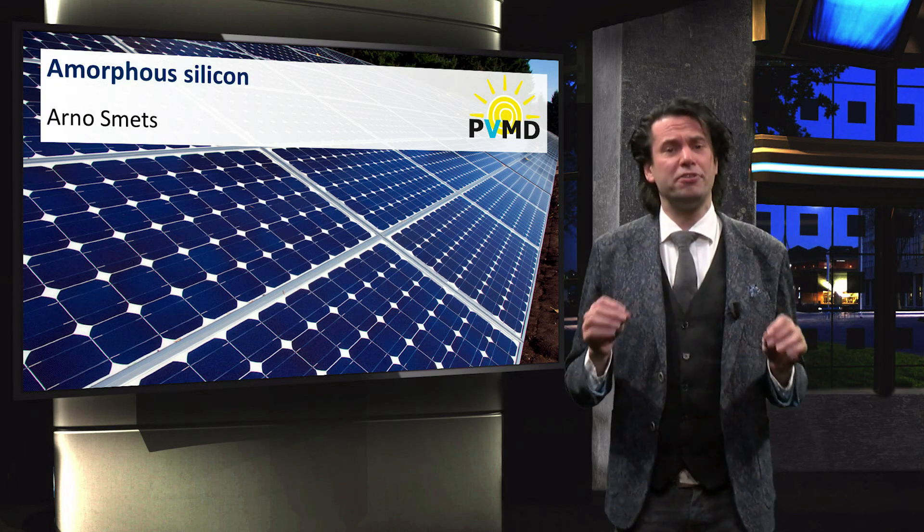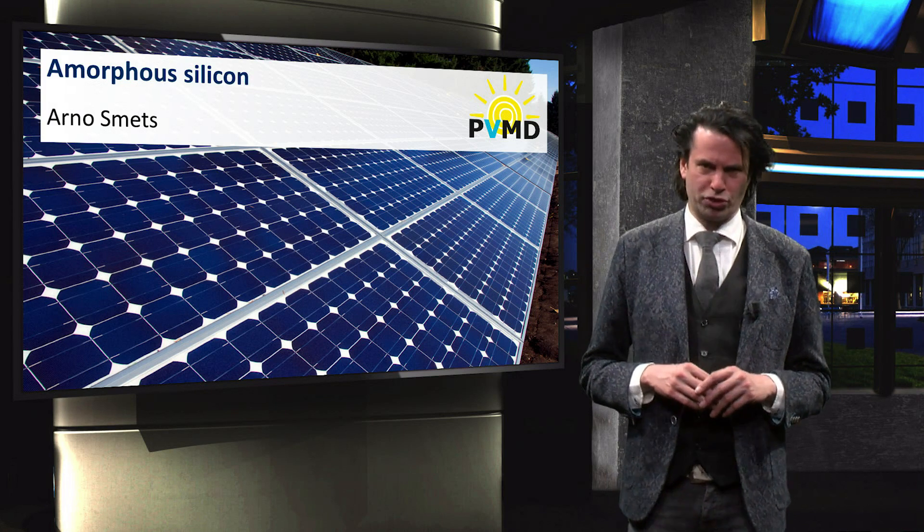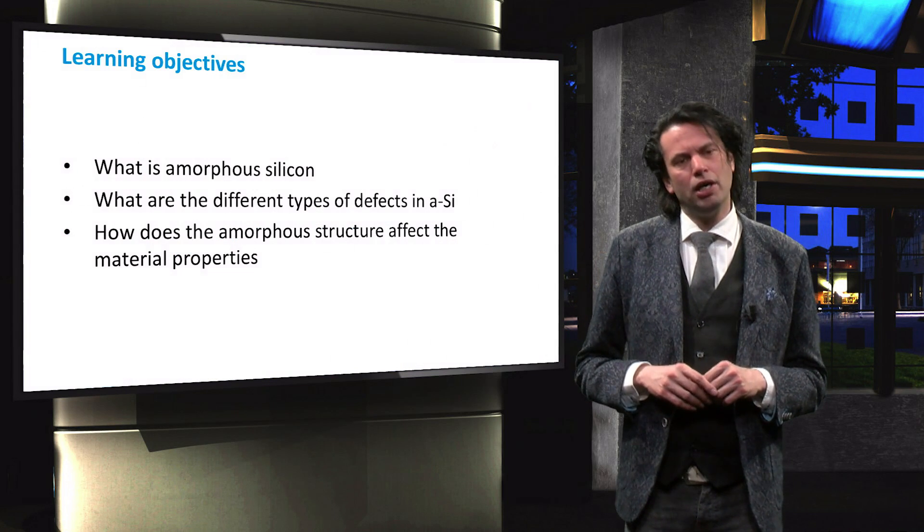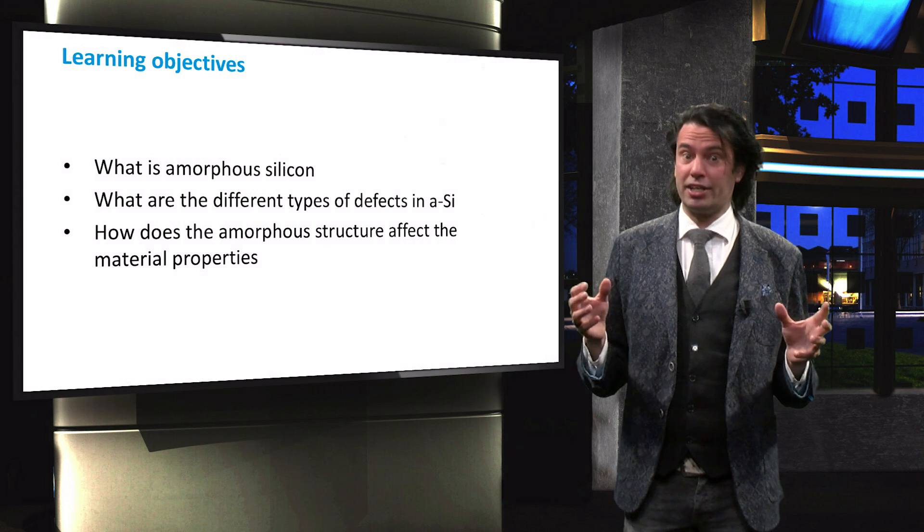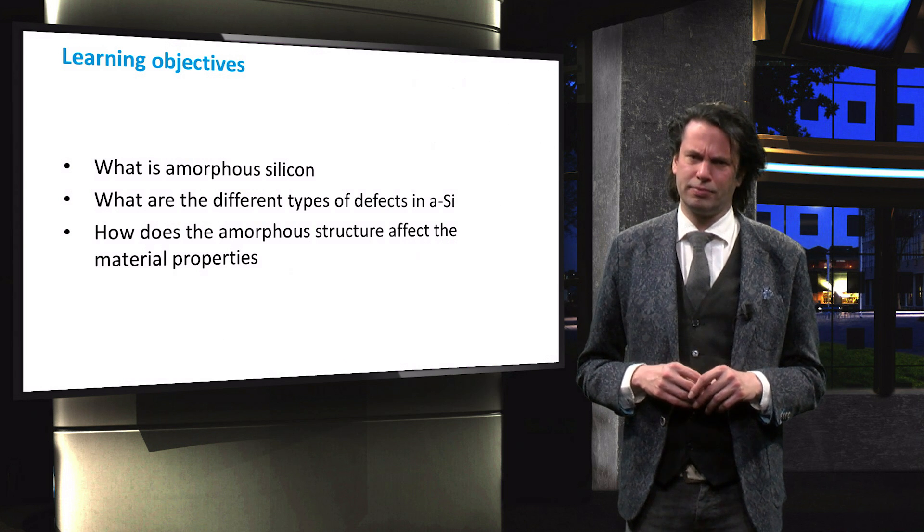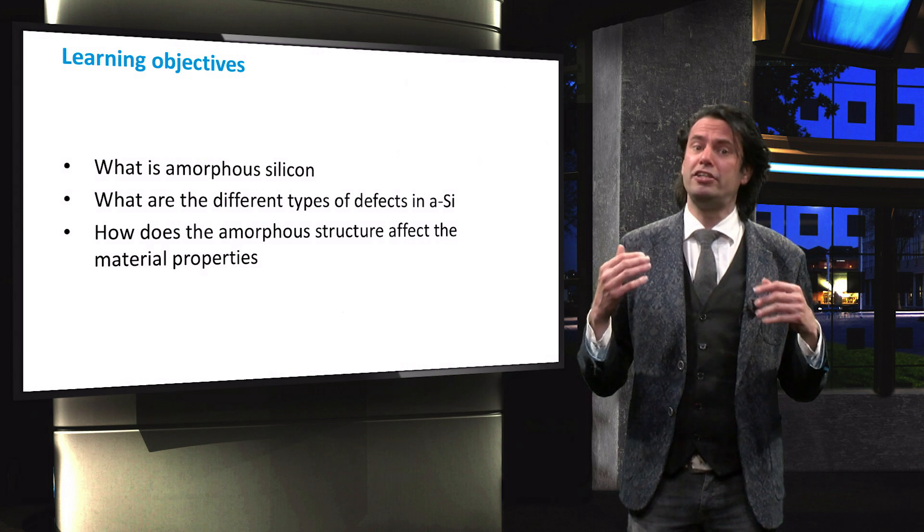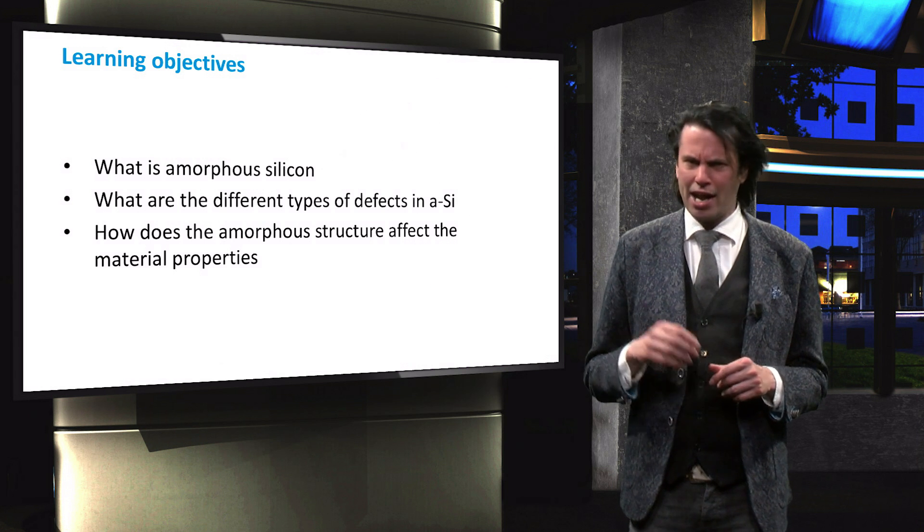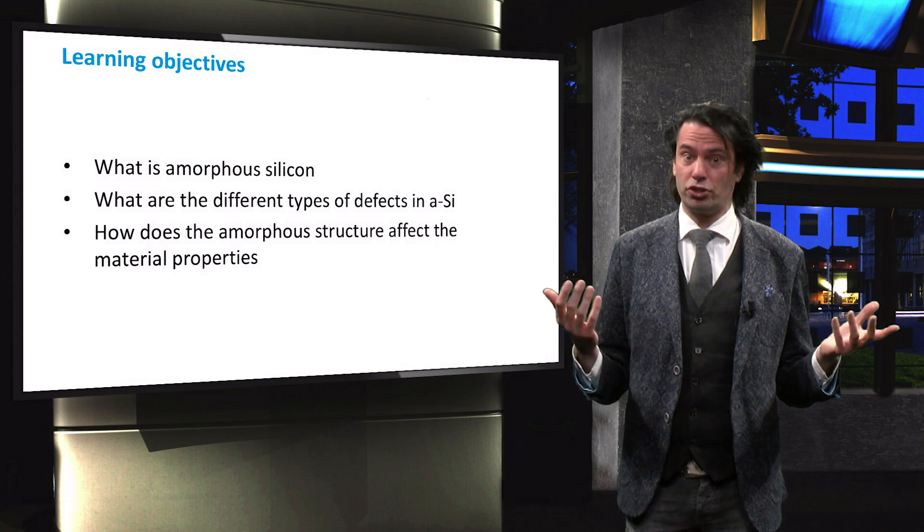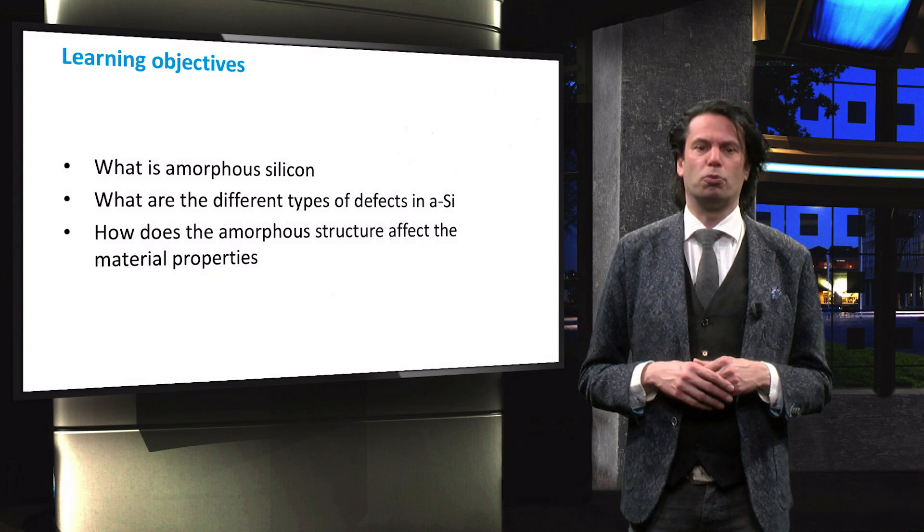In this video we will discuss a material that is crucial for thin-film solar cells, namely amorphous silicon. We will learn what amorphous silicon is and how it differs from crystalline silicon, discussing the defects in amorphous silicon and how they affect important material properties like conductivity, band gap energy, and absorption.